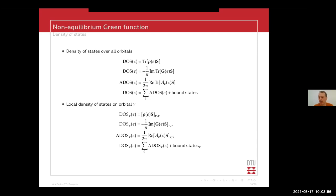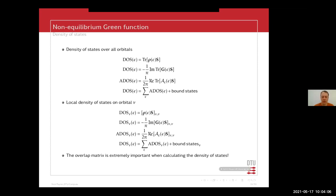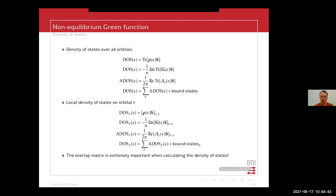The same relationship holds for figuring out on exactly which orbitals you have your bound states. You can do your analysis by looking at a specific orbital at a specific energy, which is very informative. The overlap matrix is extremely important when calculating the density of states, because you have your Green's function times S. If you have a non-orthogonal basis, you should typically have a slightly larger device region — there is a border region where you cannot fully trust that your density of states is correct because the overlap extends outside your Green's function region. We will come back to this later.